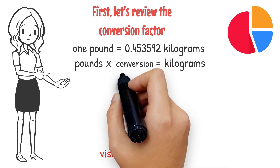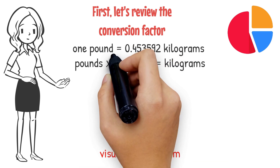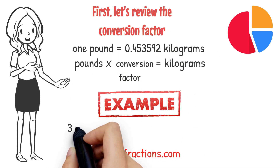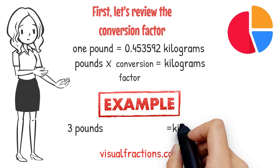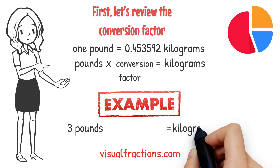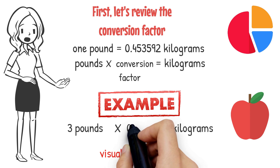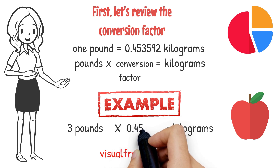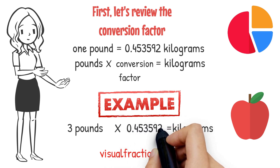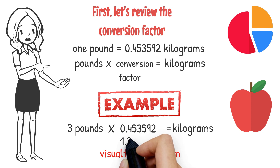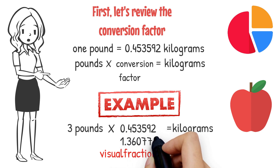Let's walk through an example. Suppose you have three pounds of apples that you need to convert to kilograms. We start by multiplying three by 0.453592. This gives us approximately 1.360776 kilograms.